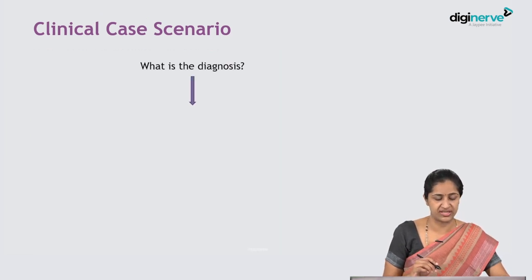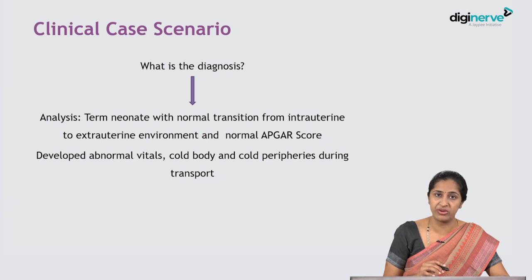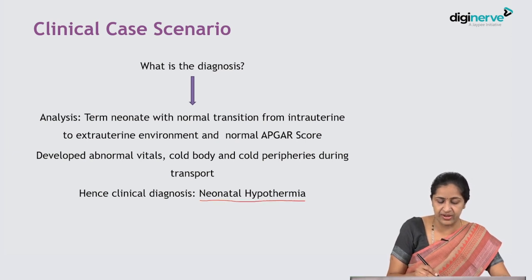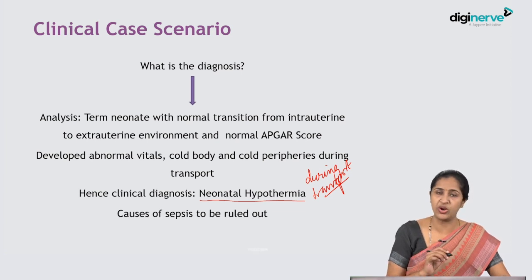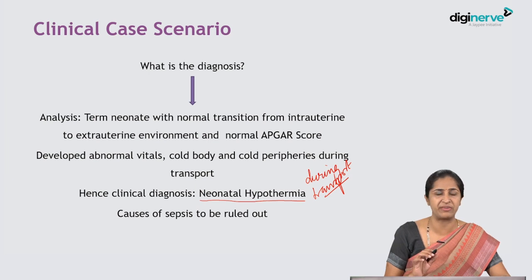So what is the diagnosis? We have a term neonate who had a normal transition from intrauterine to extrauterine life, with normal APGAR scores. But during transport she developed abnormal vitals, cold body, and cold peripheries over 6 hours. Our clinical diagnosis will be neonatal hypothermia which developed during transport. However, we can never rule out sepsis — it should always be kept in mind whenever we receive a baby with cold peripheries, cold body, and poor activity. It is always a primary differential diagnosis.